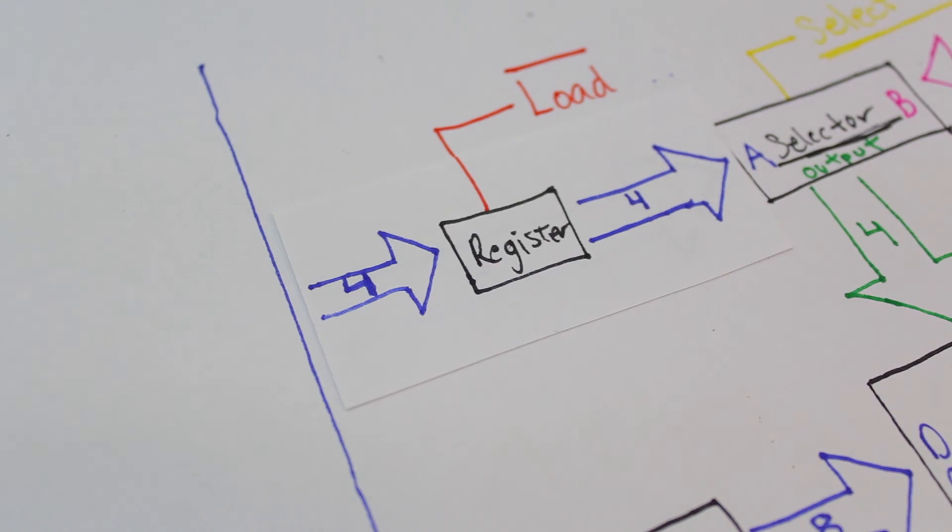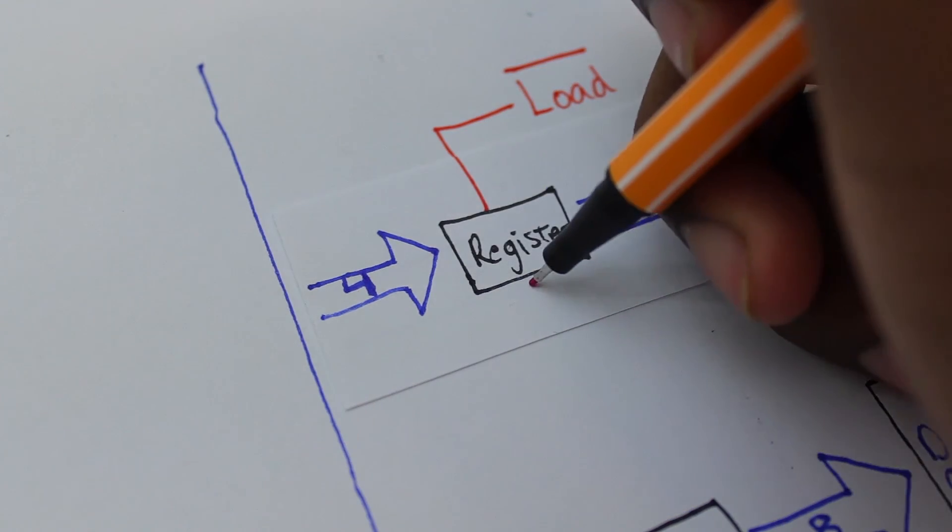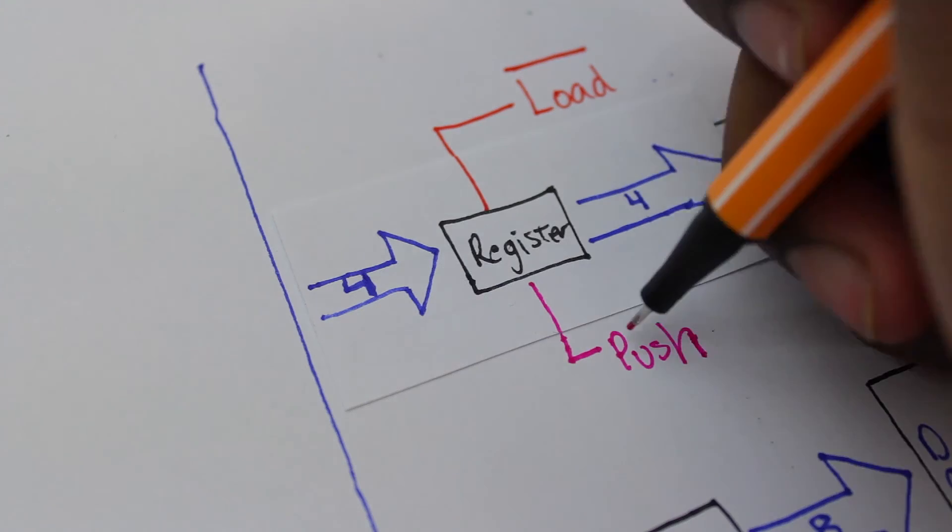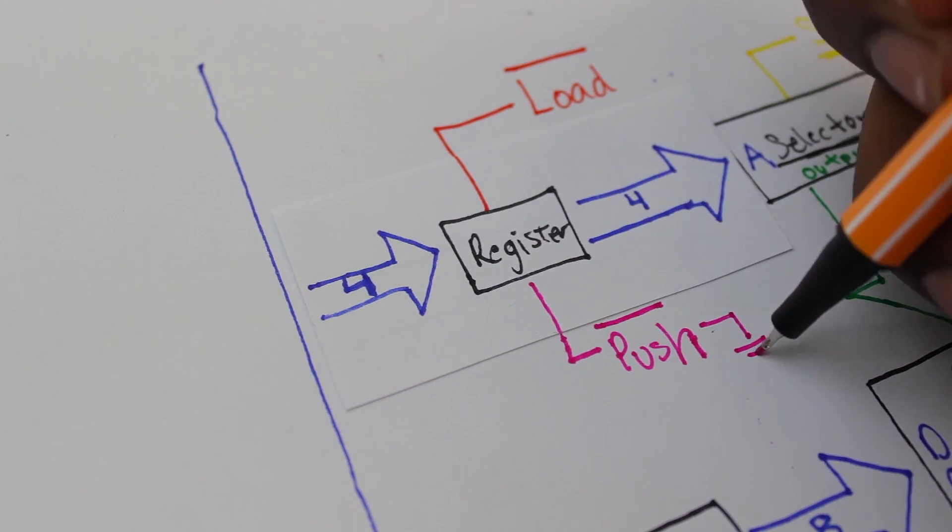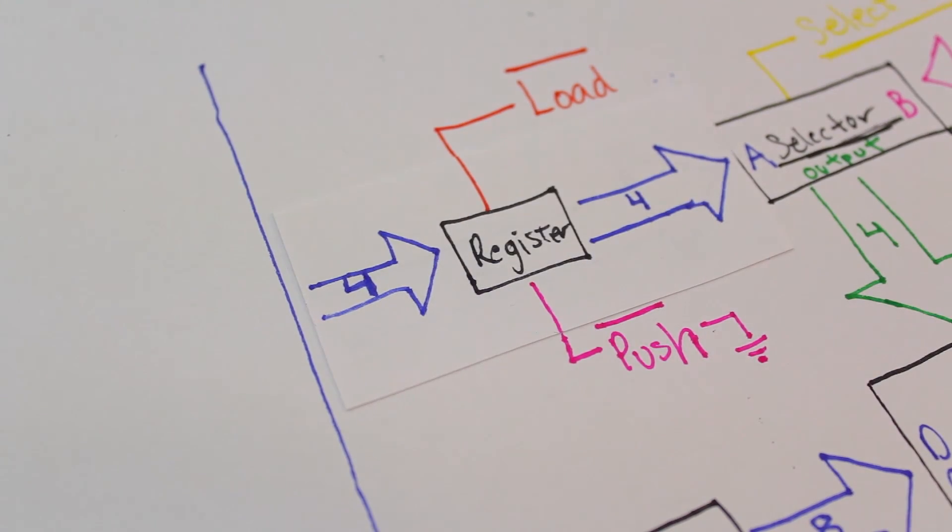Now, the enable line or control signal that tells the register to output its content is tied low, so it's always outputting the stored address to the selector IC. This is just so we have one less control line to worry about.